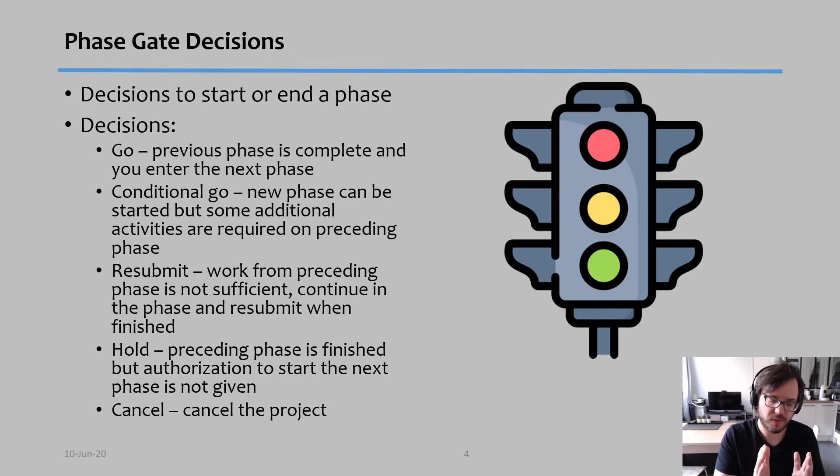There's actually at the end of the phase, there's normally a meeting. We call them a phase gate decision. So this is a decision to start or to end a new phase. And there's typically five decisions that can be held here. The first option is you have a go decision. Let's imagine we just finished phase one. All right, whatever you did in phase one is good. You can now start phase two. That's the best decision you can have.